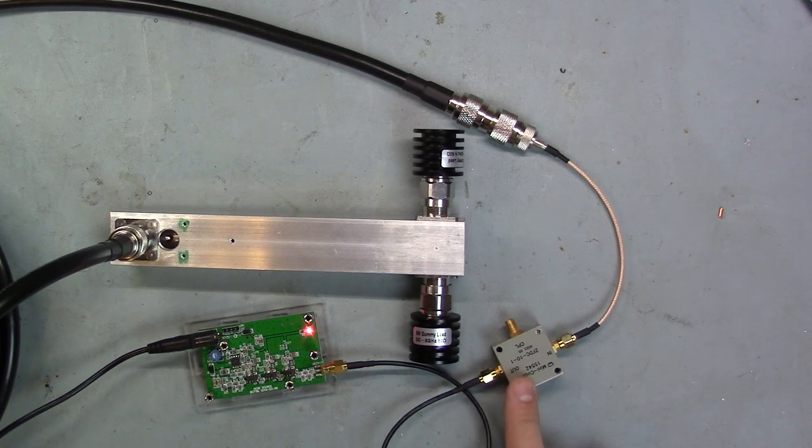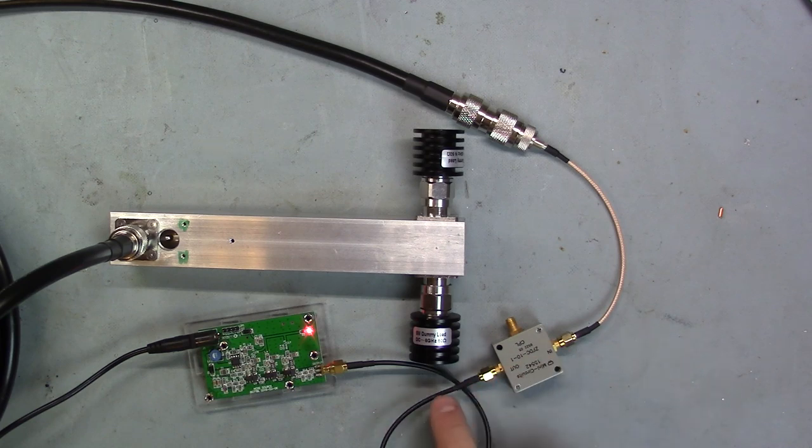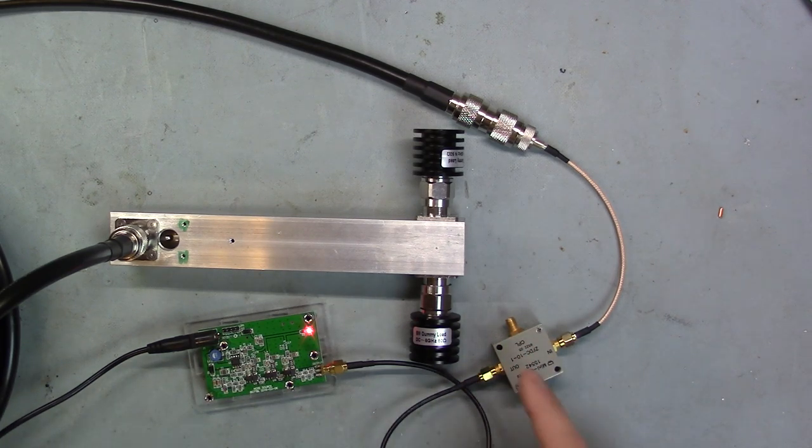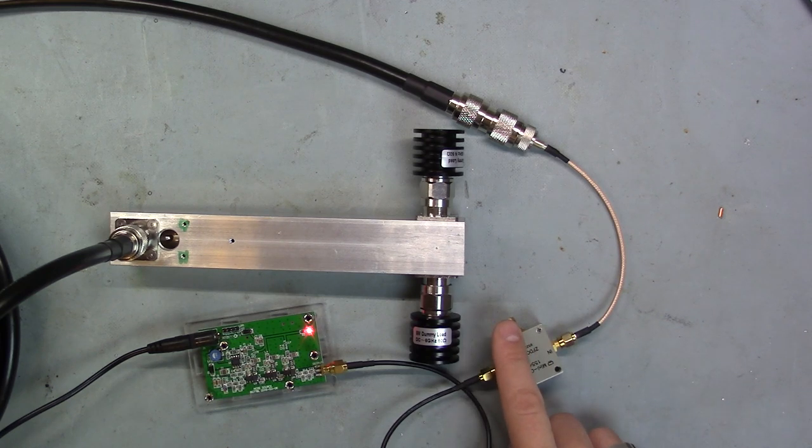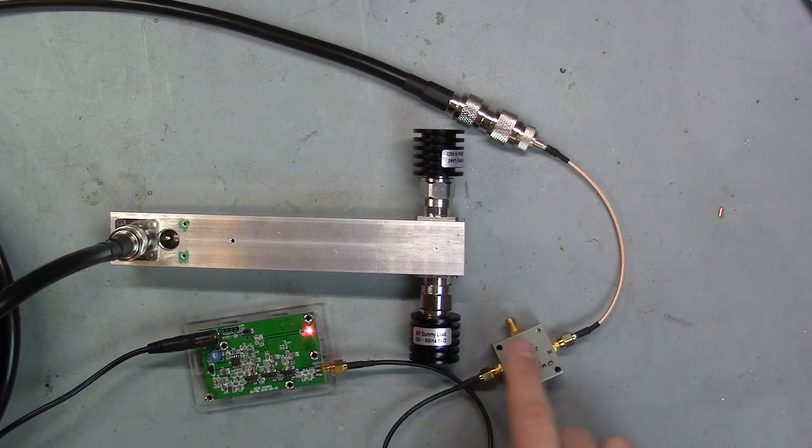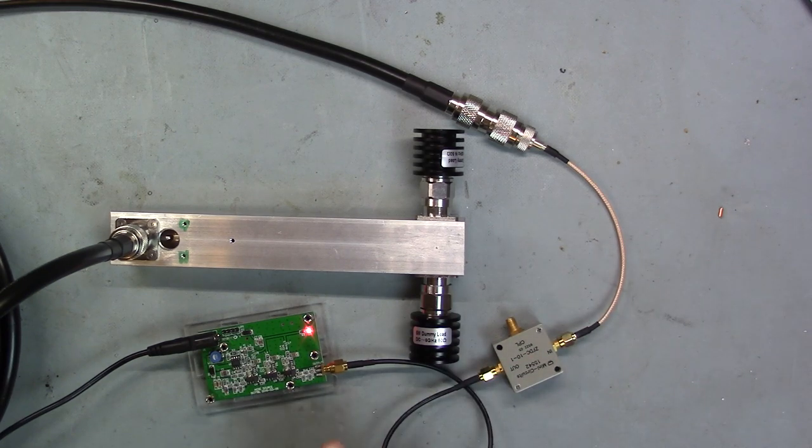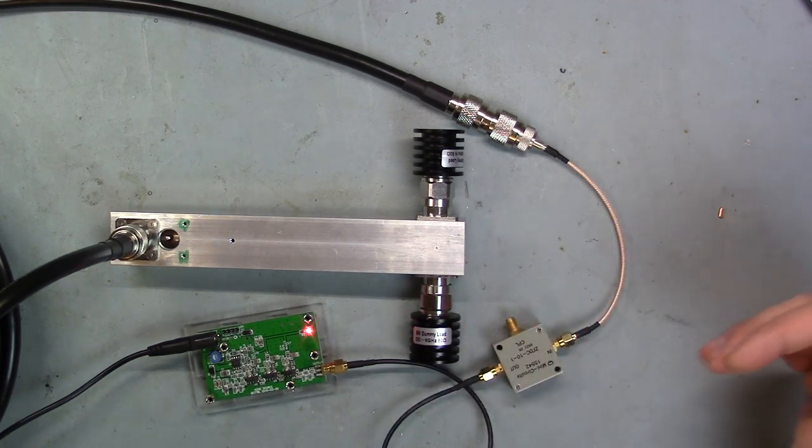So here I have a directional coupler and what the directional coupler does, it allows RF to flow in either direction. But the coupling port here only, well, ideally measures kind of samples off the amount of energy flowing in one direction only. So in this case, I'm injecting a signal into the output port and I've connected my power divider to the input port. So I'm not measuring the amount of energy traditionally that would be going out of a system. I'm kind of measuring what's coming back.